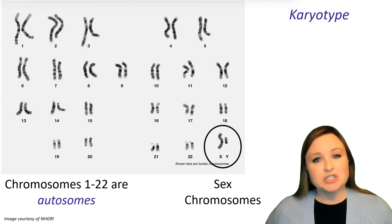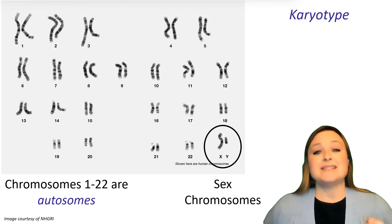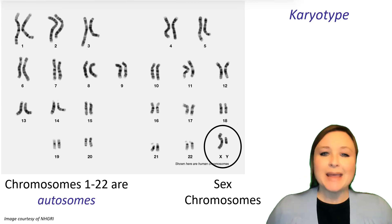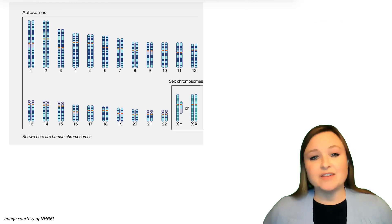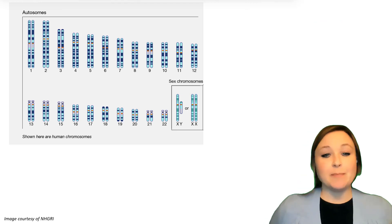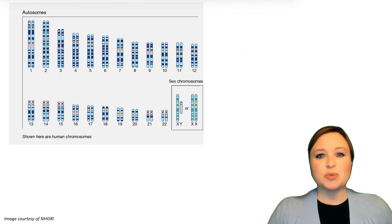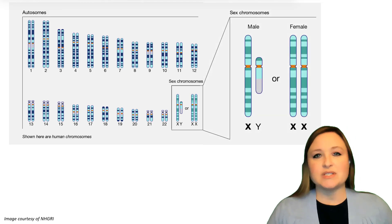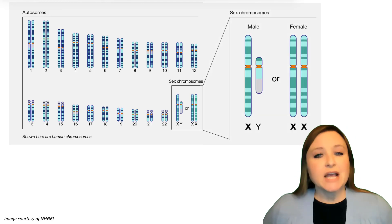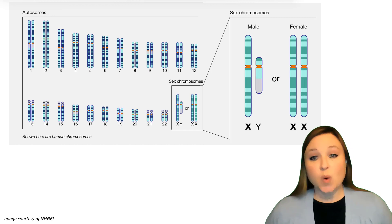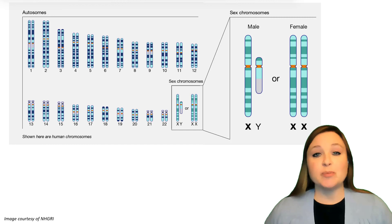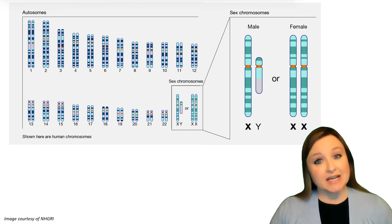These two chromosomes are going to determine the sex of an individual, whether they're male or female. There are two options: there's X and there's Y. A male individual is going to have one X chromosome and one Y chromosome, and a female is going to have two X chromosomes.